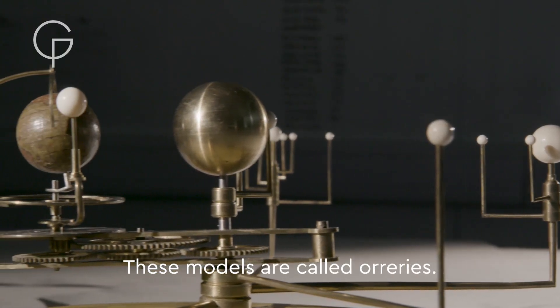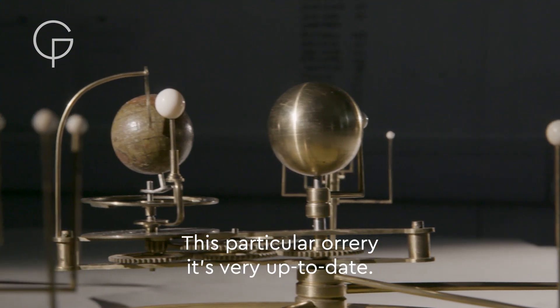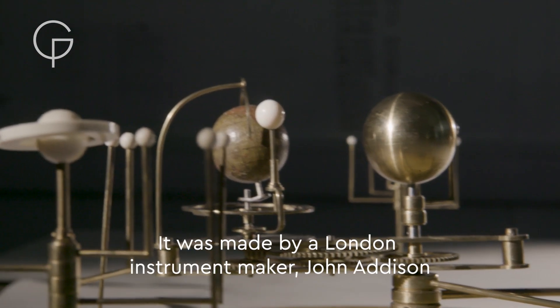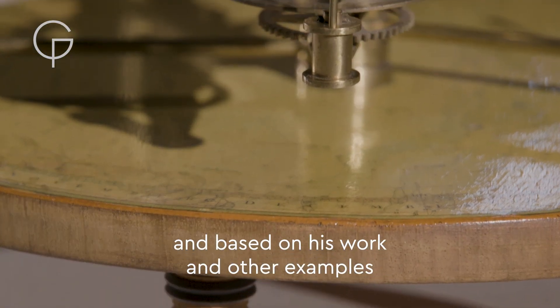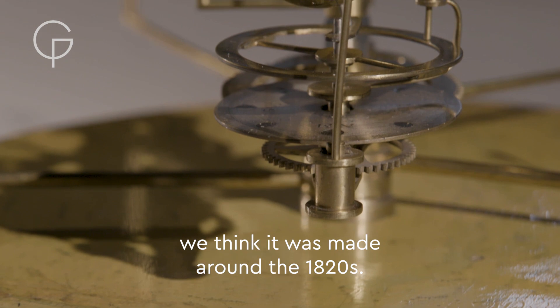These models are called orreries. This particular orrery is very up to date. It was made by a London instrument maker, John Addison, and based on his work and other examples, we think it was made around the 1820s.